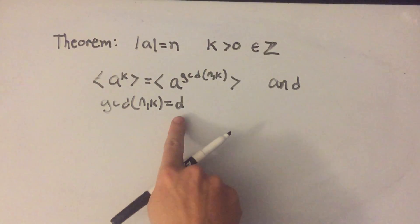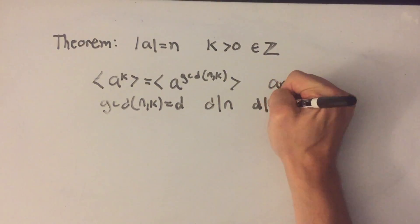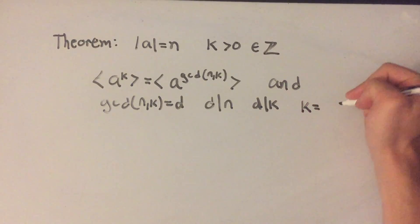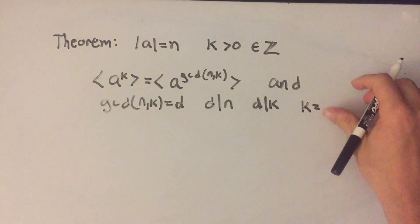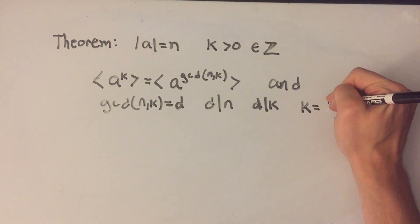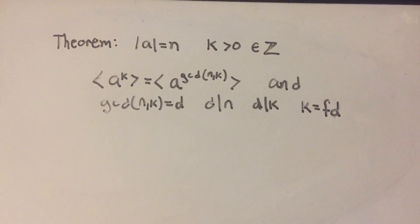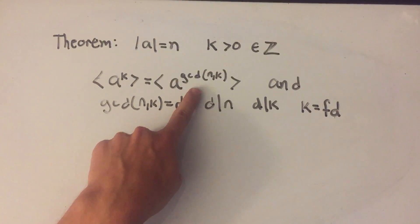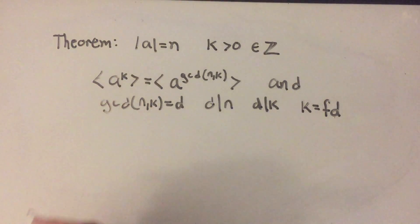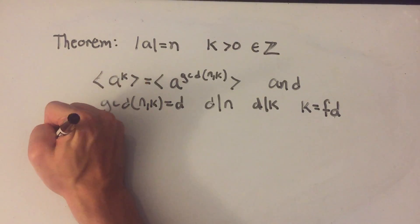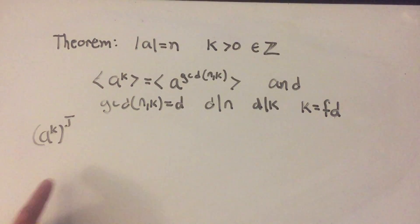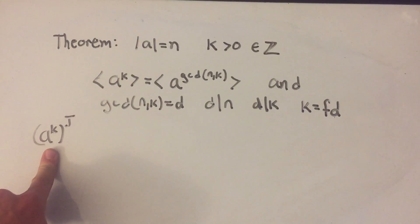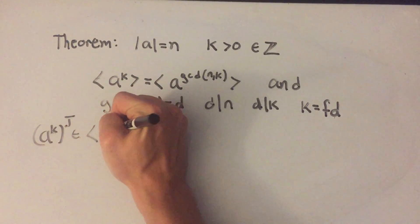Since d divides n and d divides k by definition of the greatest common divisor, that means k is some integer multiple of d — say k equals f times d. So the first thing I'm going to show is that the set generated by A to the k is contained in the set generated by A to the d. Let's take any arbitrary power of A to the k, say A to the k to the j, since that set is all powers of A to the k.